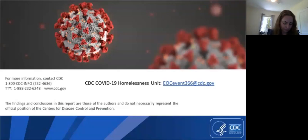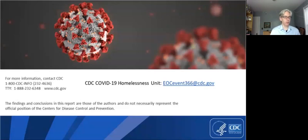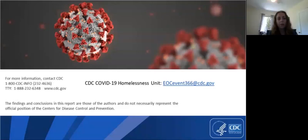Norm asked Rebecca: some guidance is dependent on local community transmission circumstances — how would somebody find out about their local circumstances? Rebecca replied: that would be determined in conjunction with the local health department, which would be able to determine whether the jurisdiction is in low to moderate, minimal to moderate, or substantial community transmission.